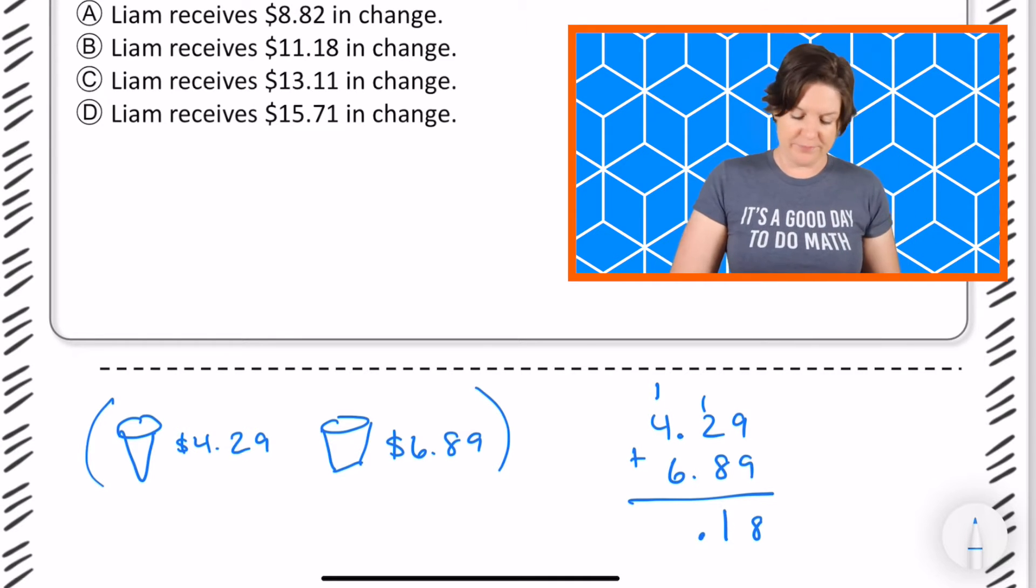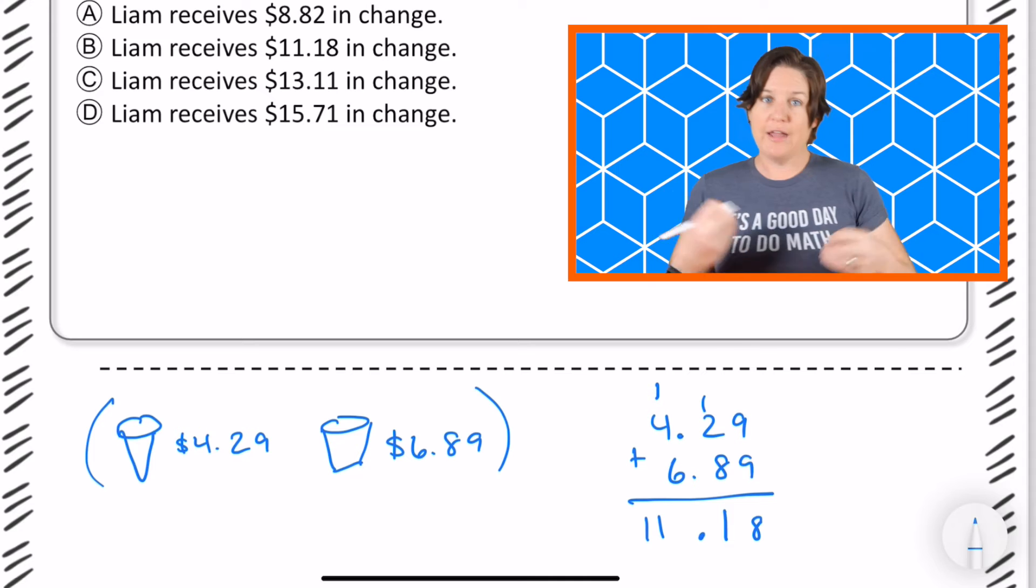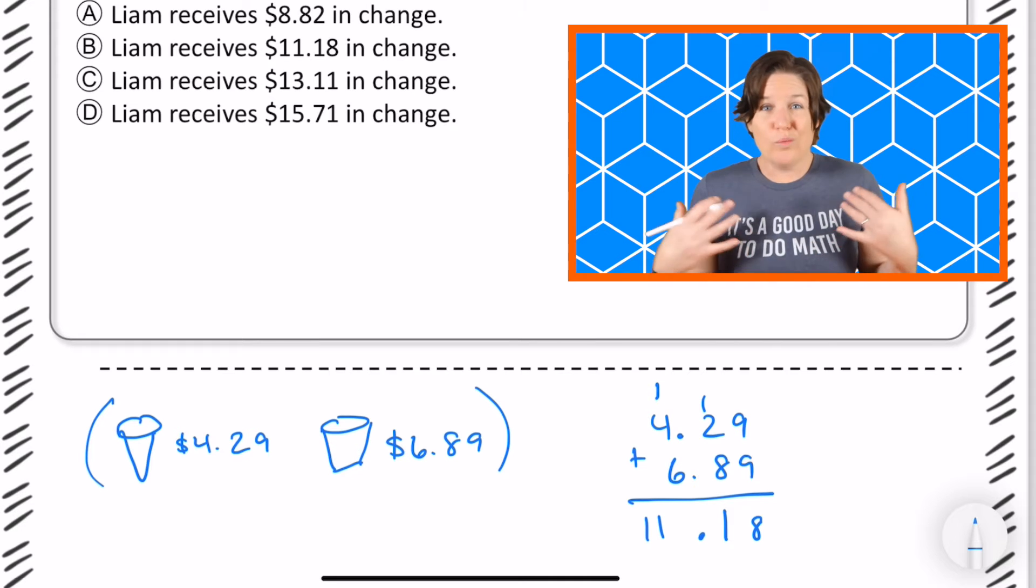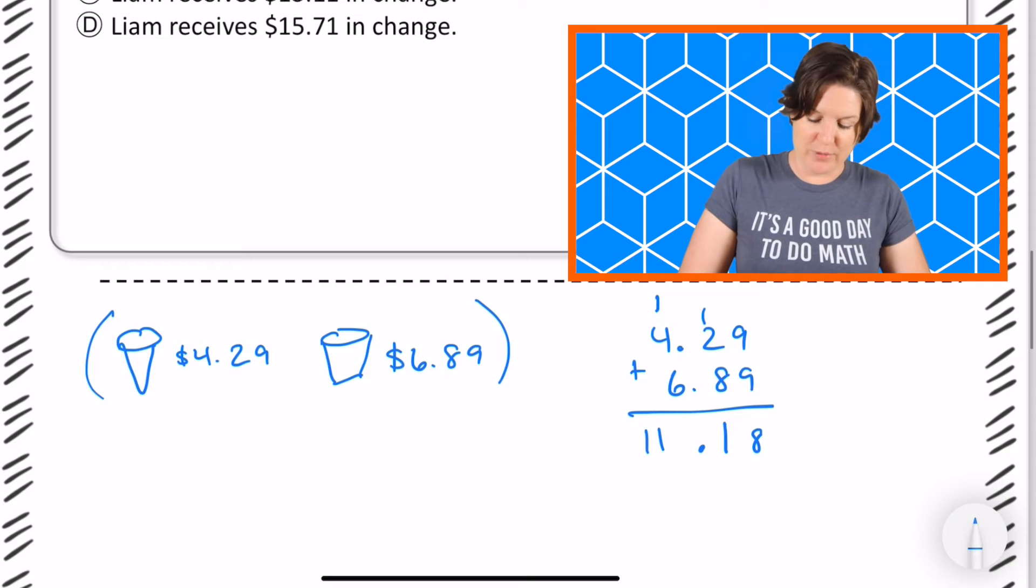So we have $11.18 which is an answer choice, and if I were to stop there and select that one I would be wrong because this is the amount that it would cost for the cone and for the milkshake. But now we need to subtract it from the $20.